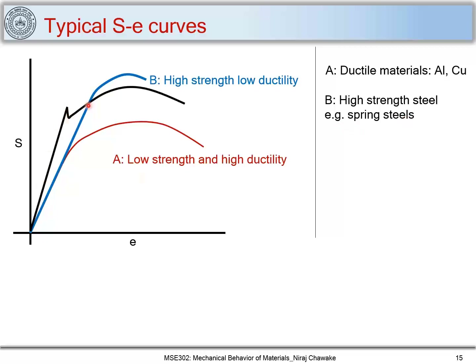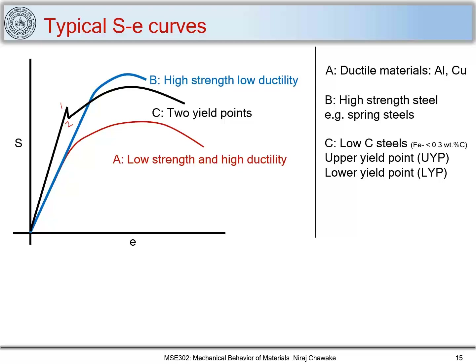There is another typical stress-strain curve which shows two yield points. This is the typical behavior of low carbon steel, which shows an upper yield point and a lower yield point. We will discuss why low carbon steel shows upper and lower yield points when we cover dislocations in the course.